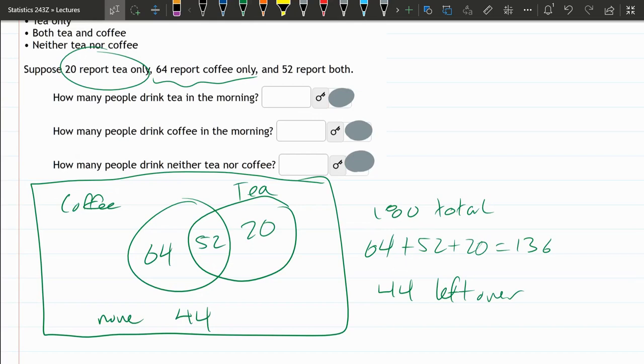All right, how many people drink tea in the morning? So tea in the morning, it's not just that 20 that was given, but it's also the 52. So 20 plus 52, you add those, you get 72.